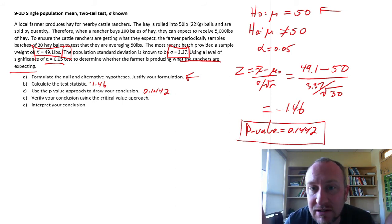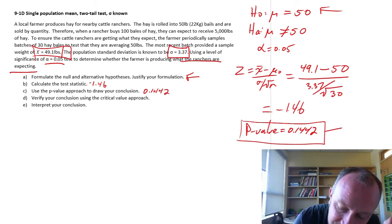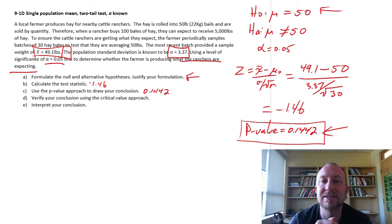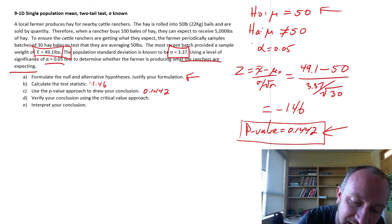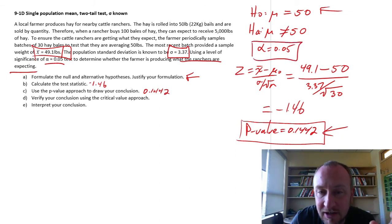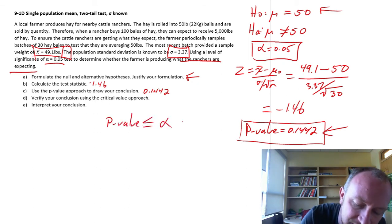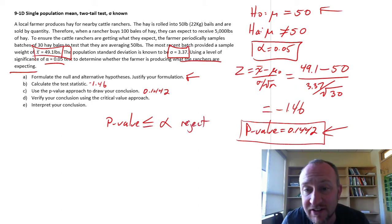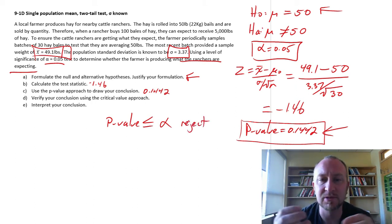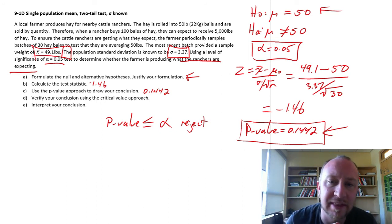And so because of that, I'm not going to reject. Because if I did reject, my exposure to a type 1 error is higher than what I'm comfortable with. And this is what that rejection rule is. That p-value has to be less than or equal to alpha in order for us to reject. If it's not, then our exposure to a type 1 error is too great. It's too high. I'm not comfortable with that.